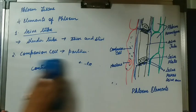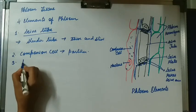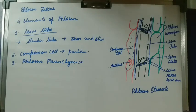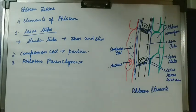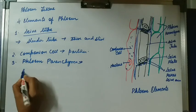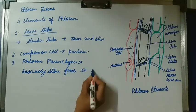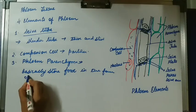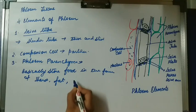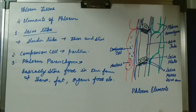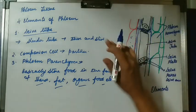The third element is phloem parenchyma. Phloem parenchyma also has thin walls and is a living tissue. It basically stores food in the form of starch, fat, and organic food. It also helps in the lateral — side to side — conduction of food.